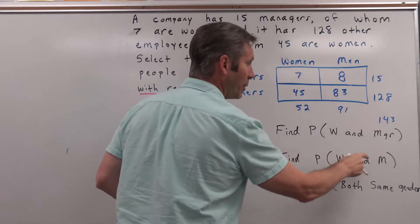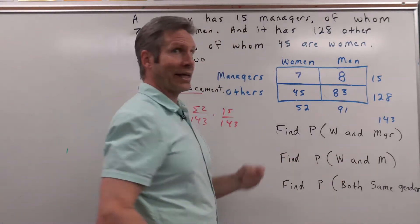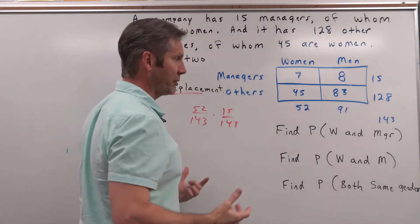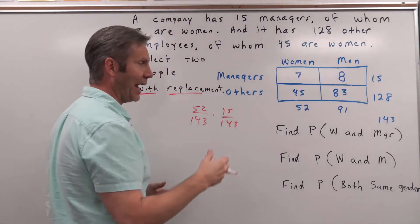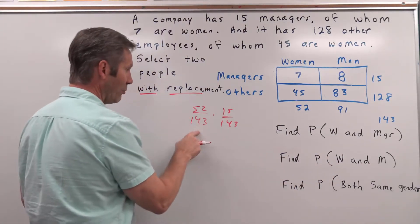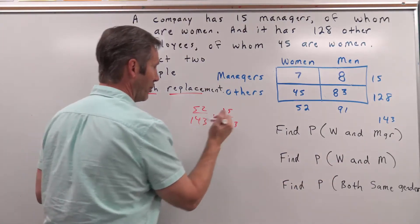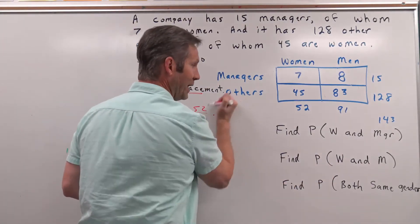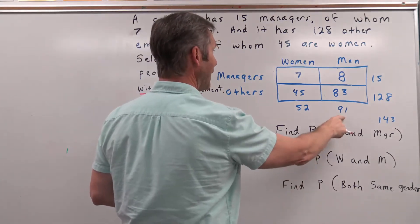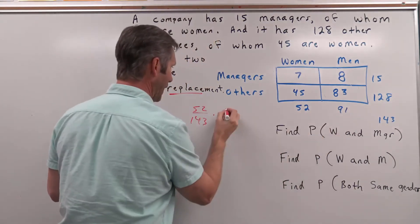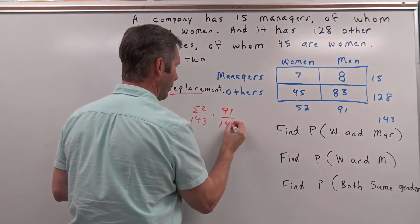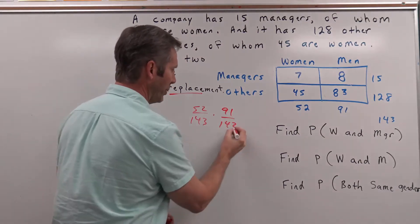How about the probability of getting a woman and a man? Again, n is more than one — we're selecting more than one thing, so 'and' means multiply. The probability of getting a woman is again 52 out of 143. The probability of getting a man is 91 out of 143. So that would be our probability there.